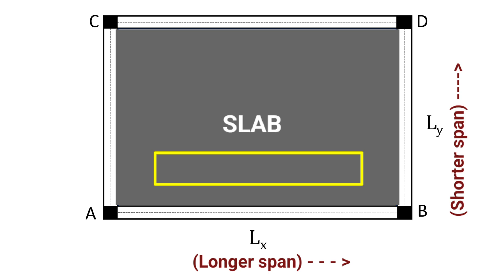However, in the case of a two-way slab, this ratio is always less than or equal to 2, that is, Lx/Ly ≤ 2.